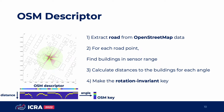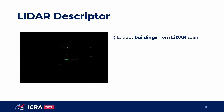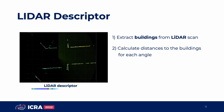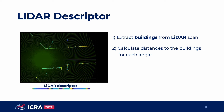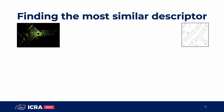Therefore, for the next step, we make the rotation invariant key. For the LiDAR side, we made a LiDAR descriptor with the same procedure. First, we extract buildings from LiDAR scans. Then, we calculate distances to the buildings for each angle and make the rotation invariant key. Using those descriptors and keys, we can find the most similar descriptor pair and localize the vehicle.